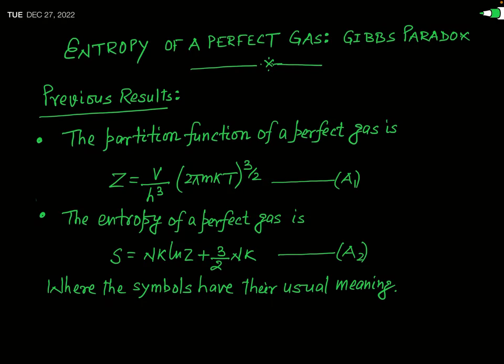In today's lecture we are going to discuss a very important phenomenon called Gibbs paradox. This Gibbs paradox is related to the entropy of a perfect gas, or you may also say it is related to entropy of mixing — when two systems are mixed together, the entropy obtained does not satisfy the additive property of entropy. That is called Gibbs paradox.